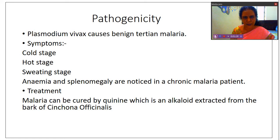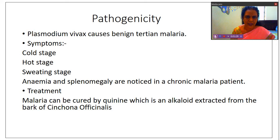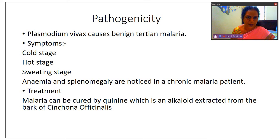These three stages will repeat when we get malaria. If the disease continues for a long time, it leads to anemia — meaning loss of blood. Why loss of blood? Because these parasites are destroying our RBCs and eating the hemoglobin. So we will get anemia and also splenomegaly, which means abnormal enlargement of the spleen. The spleen is an organ of our immune system, so our immune system will not function properly if malaria continues.